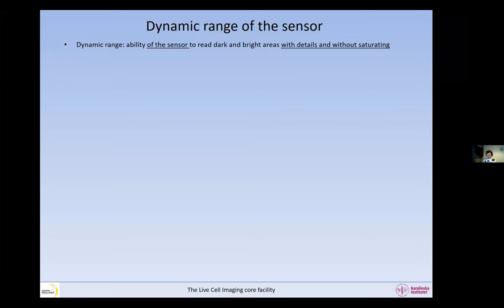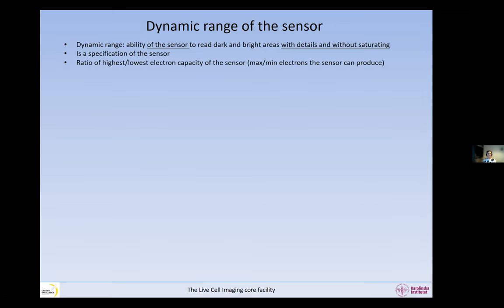The dynamic range is a ratio of electrons — the highest number divided by the lowest number of electrons the sensor can produce. The lowest limit is the readout noise. When we amplify and convert the signal, we create readout noise — that is the minimum signal. If we have no light at all, we will anyway have a few electrons that will be read. The highest limit is called the full well capacity, measured in electrons — the maximum number of electrons before the sensor saturates.